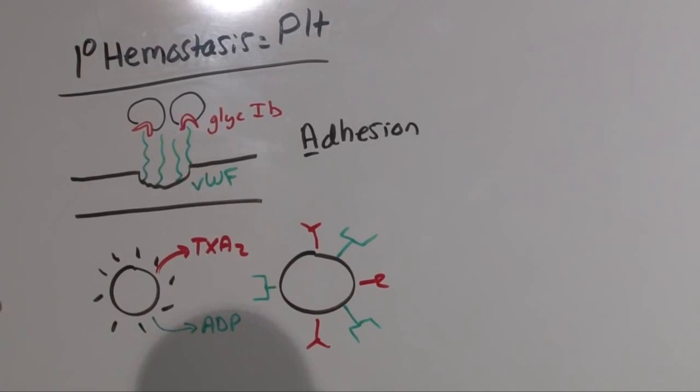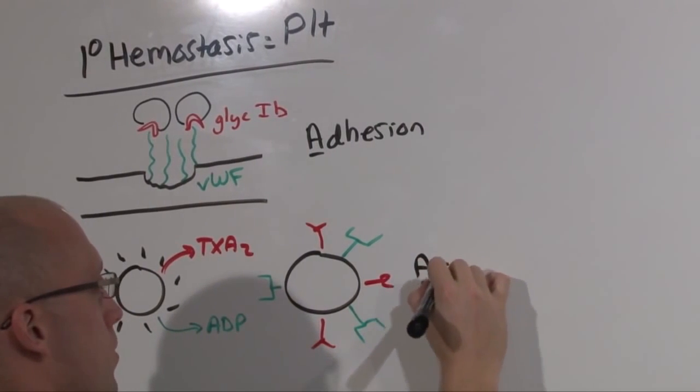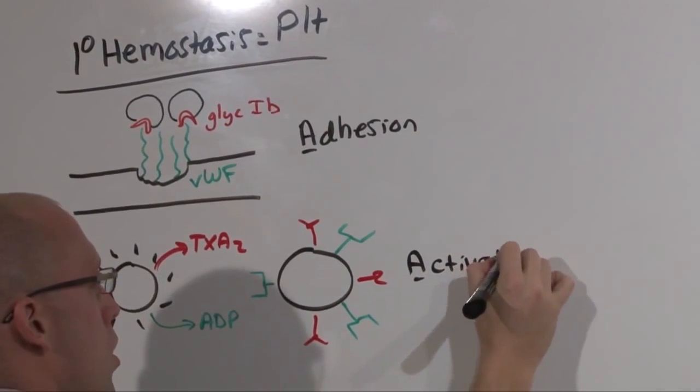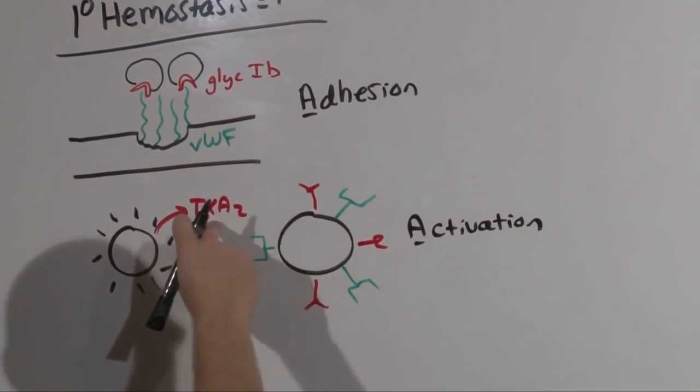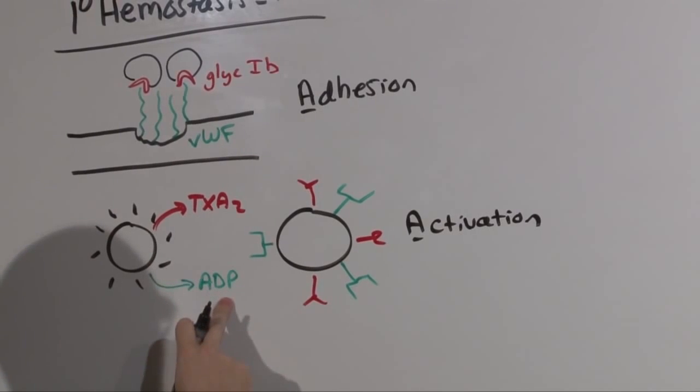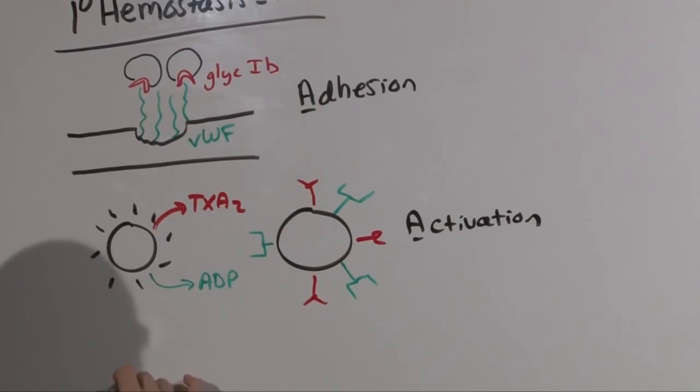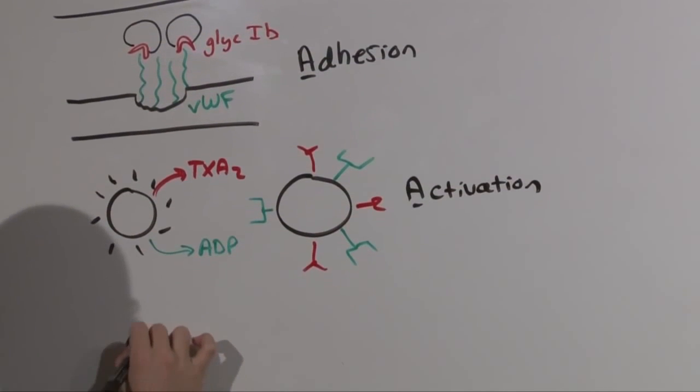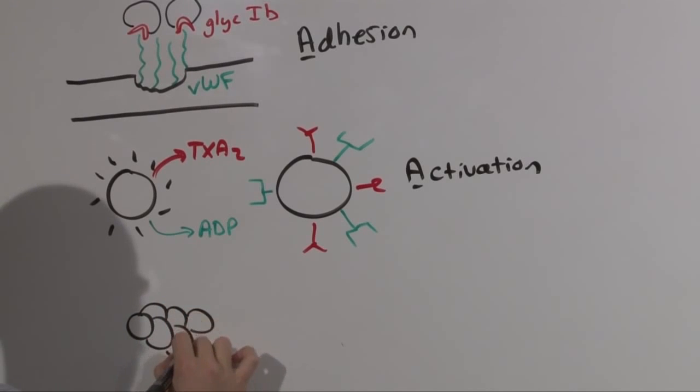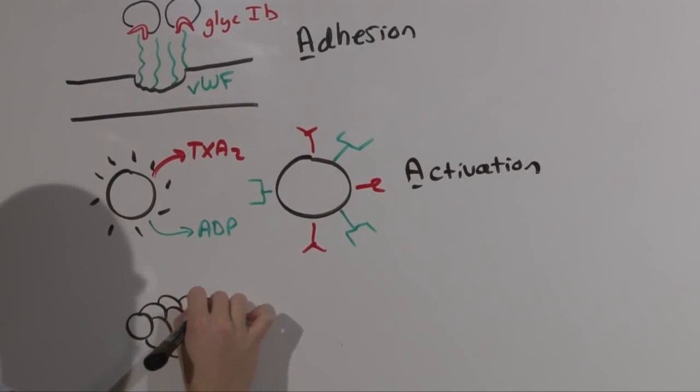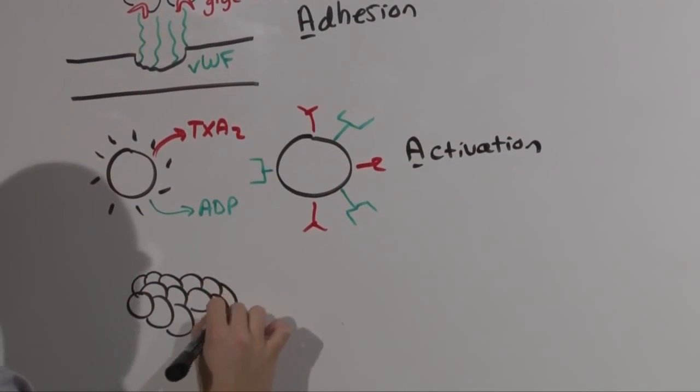This step, activation, causes the expression of more thromboxane A2 and more ADP as well as glycoprotein 2b3a. The reason why this happens is to get platelets to aggregate, the third step and the end of primary hemostasis.